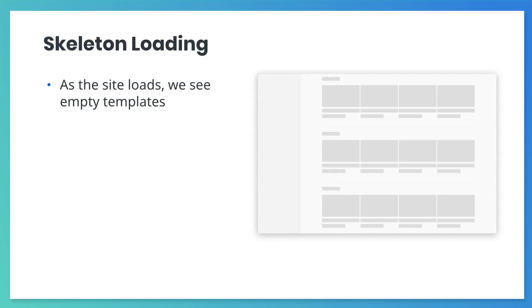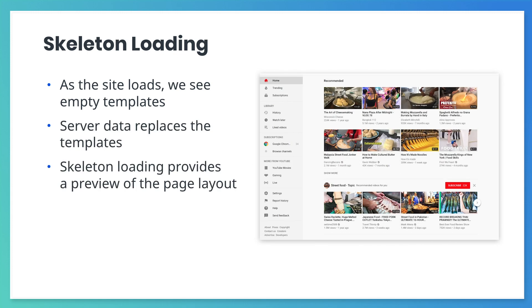Sometimes, when a video site is first loading, the user sees a lot of blank boxes, and as the videos load, the boxes get replaced with actual videos. This type of loading is called skeleton loading, and it prevents objects on the page from jumping around as videos arrive from the server.